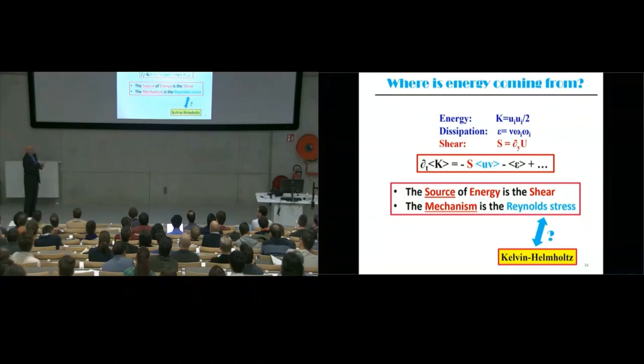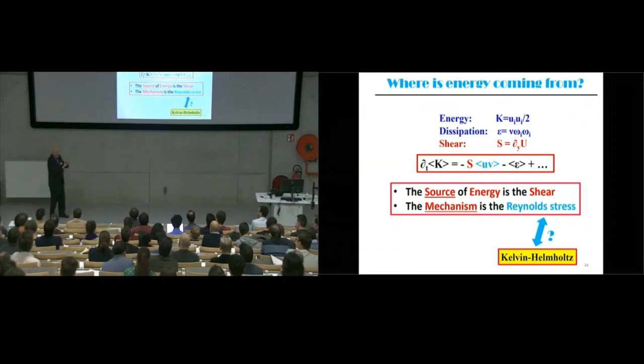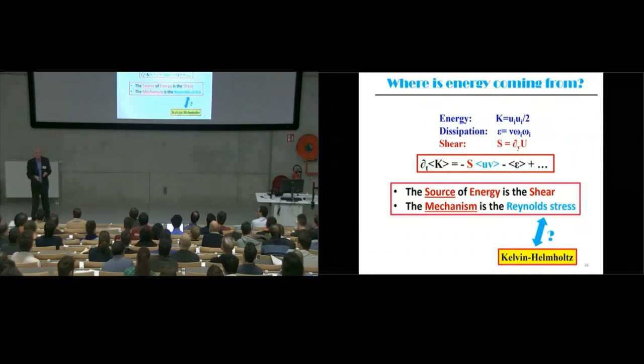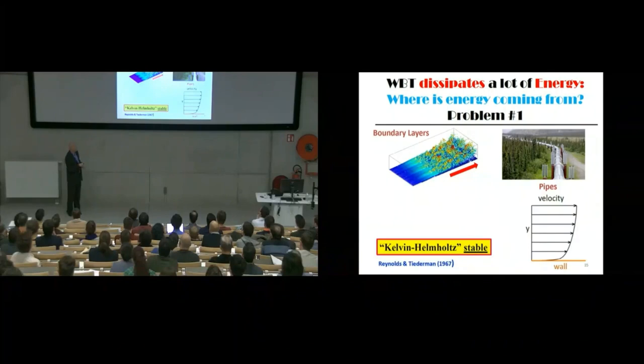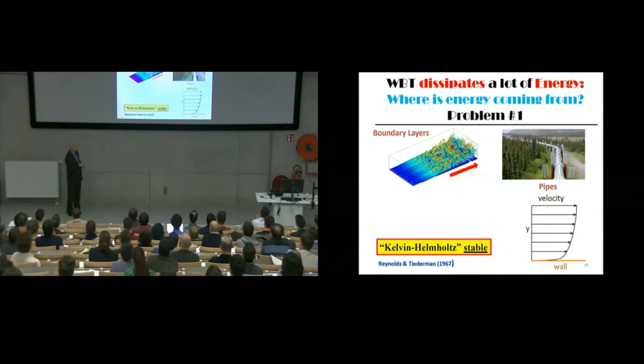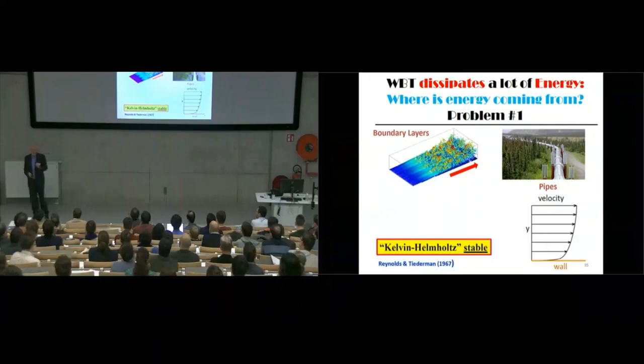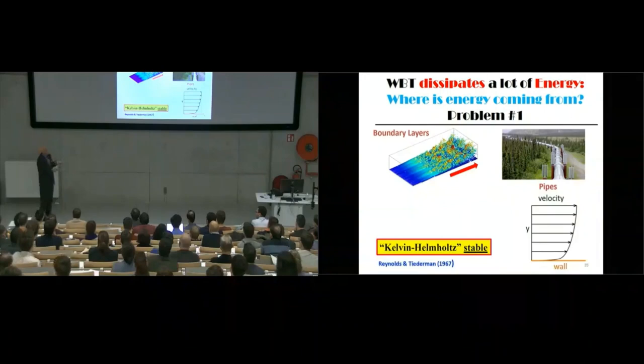We need both the shear and something to move the flow up and down to extract energy from the shear. In free shear flows, Kelvin-Helmholtz did that for us, but here it doesn't work. This was tested and tried very early. The mean velocity profile of wall-bounded flows looks like this — there is no inflection point. They are Kelvin-Helmholtz stable, actually modally stable. There is no modal instability known for this profile, this canonical profile of boundary layers. So we have to look for something else.